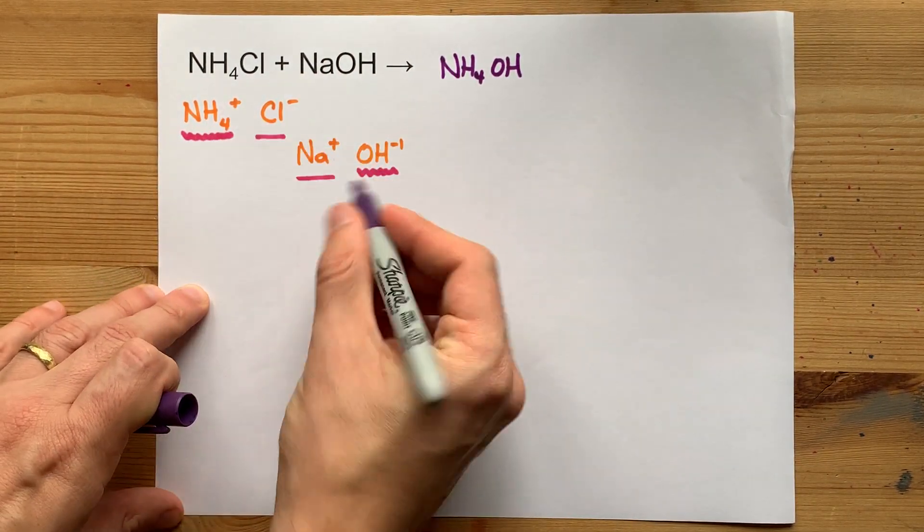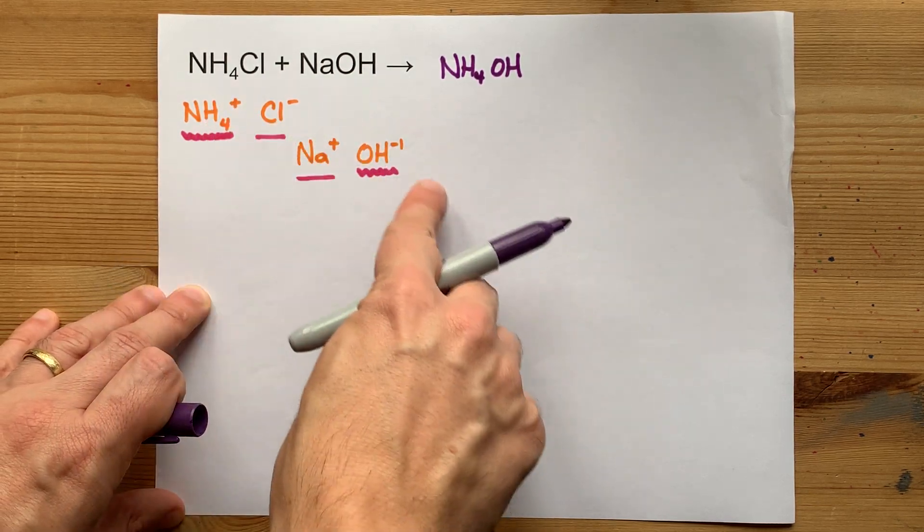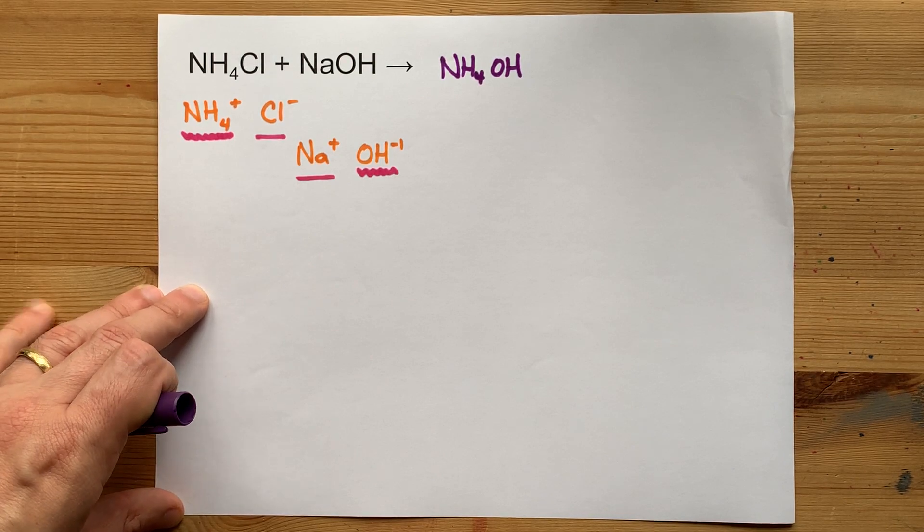I only need one of each to get those charges to cancel. I crisscross one and one down. You don't write ones, so I'm done with NH4OH.